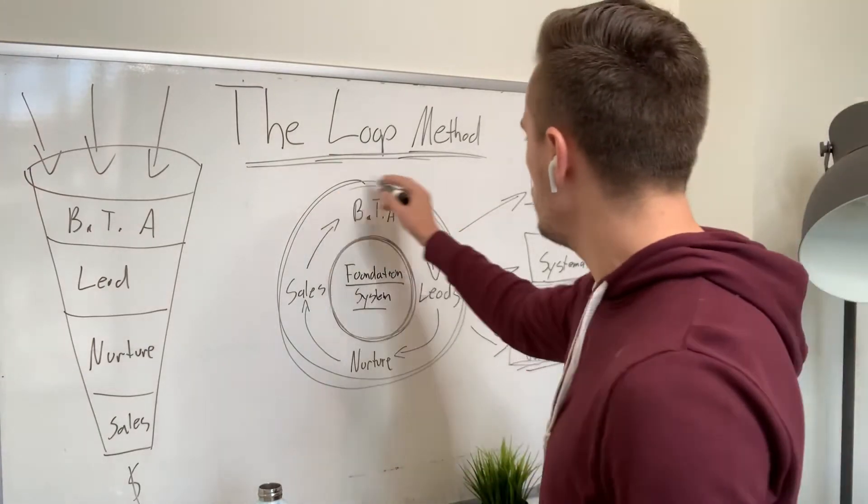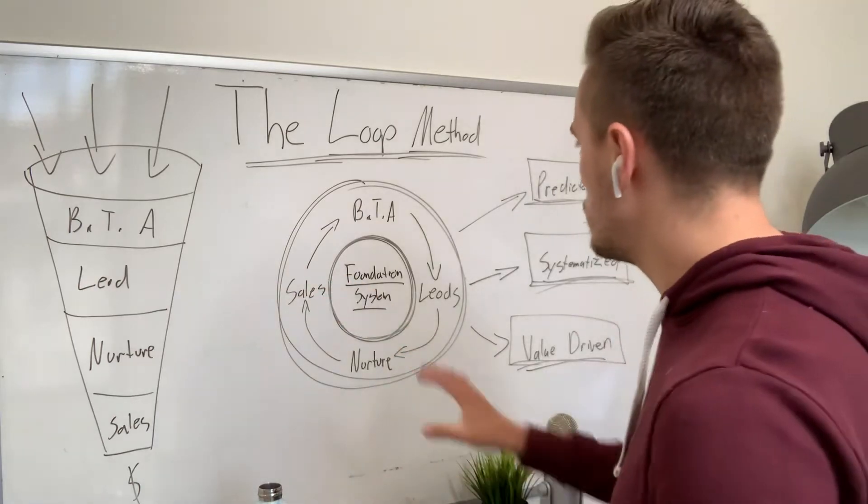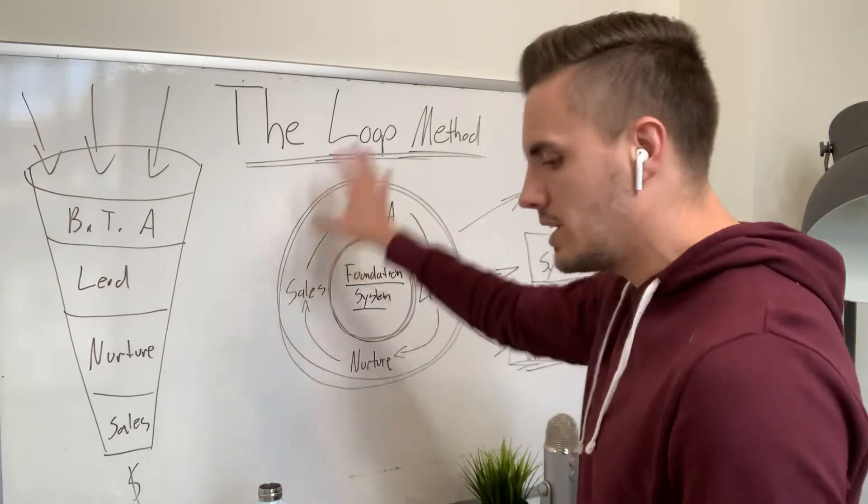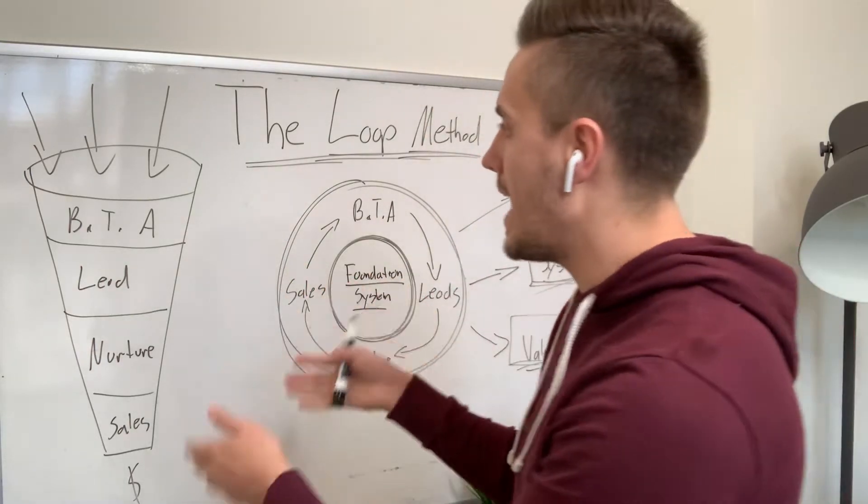Now what I'm going to be doing is I'm going to share with you the four different steps. And the reason I have these two models here is because the loop method, I like that it works in a loop because you can keep doing it, you can kind of keep cycling through it. But in essence, it is an organic funnel.